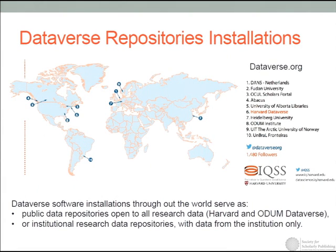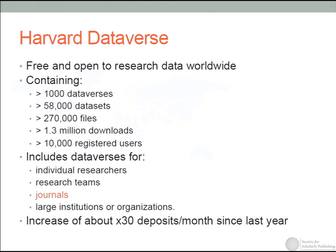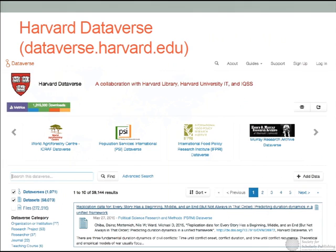I'll talk in particular about the Harvard Dataverse repository, because it's one of the repositories that is open to all researchers and journals around the world — open and free. It already contains more than 1,000 Dataverses, 58,000 datasets with around 170,000 files, and so far there have been more than a million downloads of those data files, with 10,000 registered users. That's the Harvard Dataverse specifically; there are other large Dataverse repositories around the world. It supports Dataverses for individual researchers, research organizations, or journals, and you can visit it at dataverse.harvard.edu.